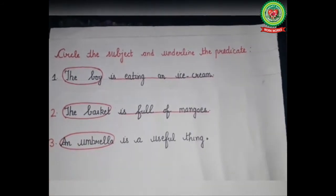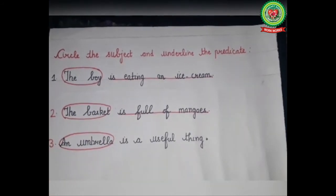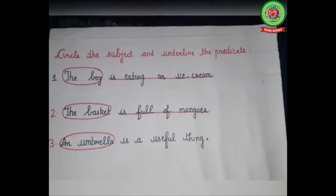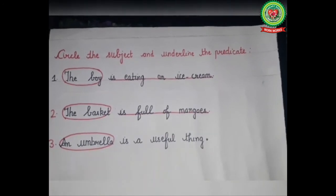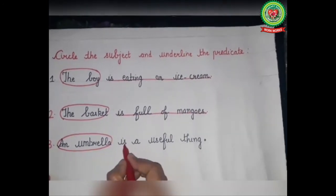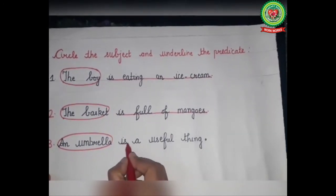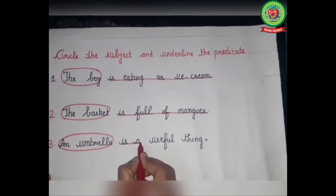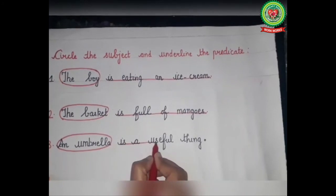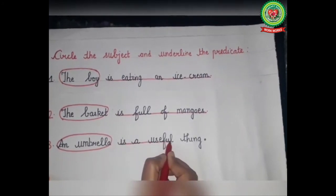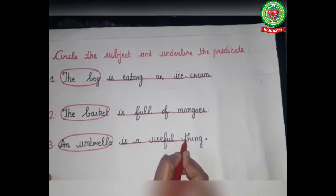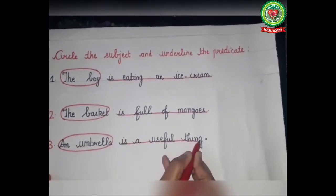What we are talking about an umbrella? The answer is 'is a useful thing,' so we will underline 'is a useful thing' as the predicate of the sentence.